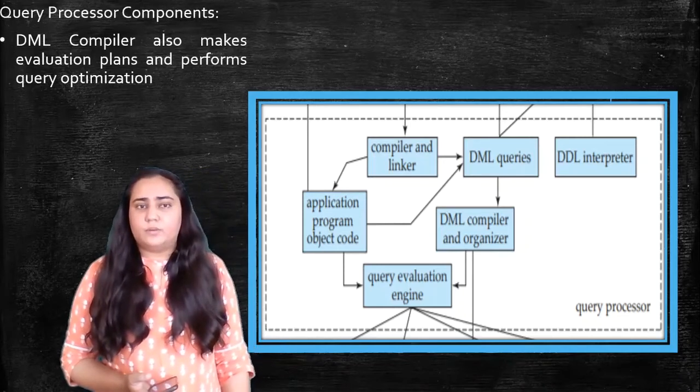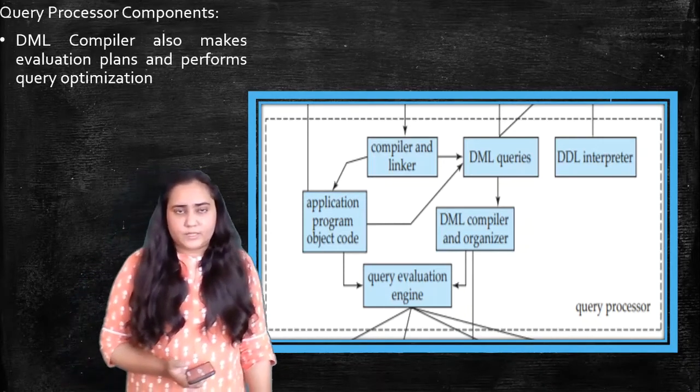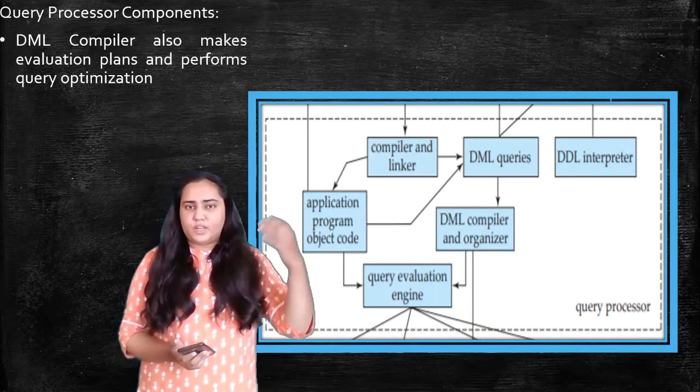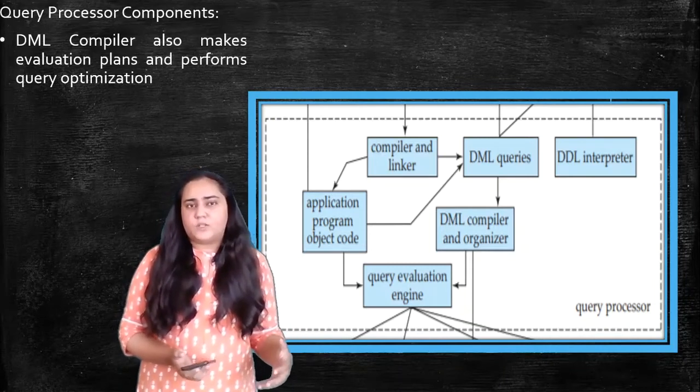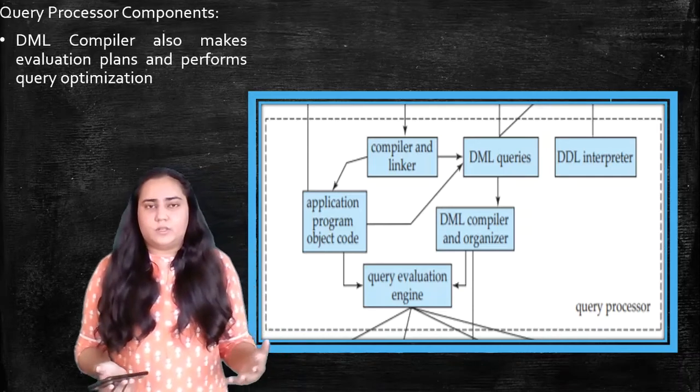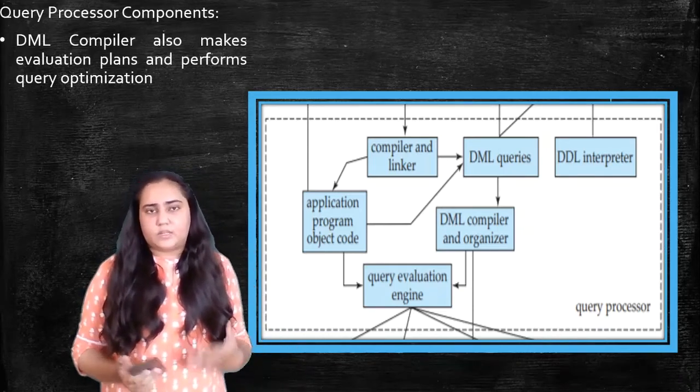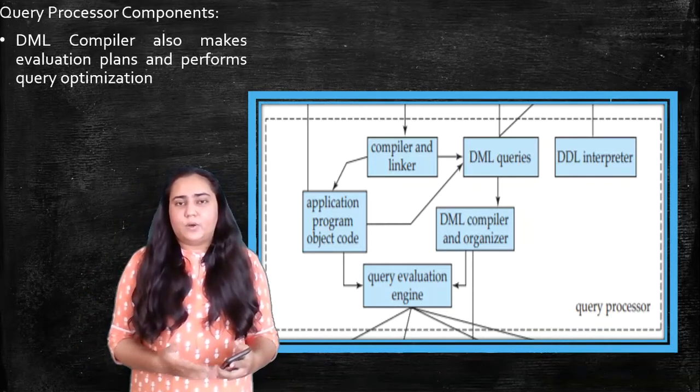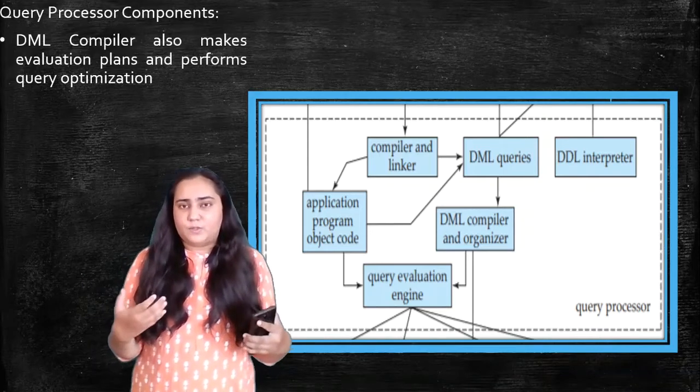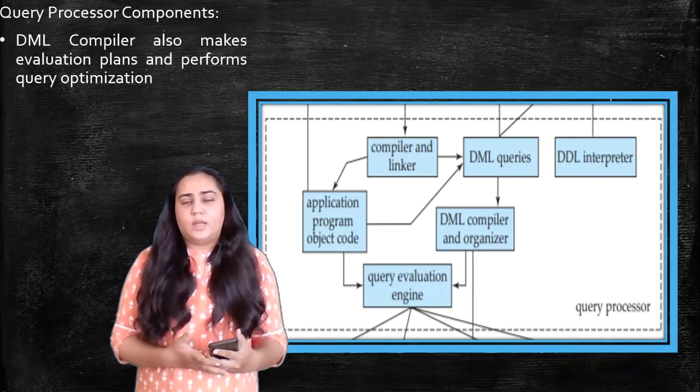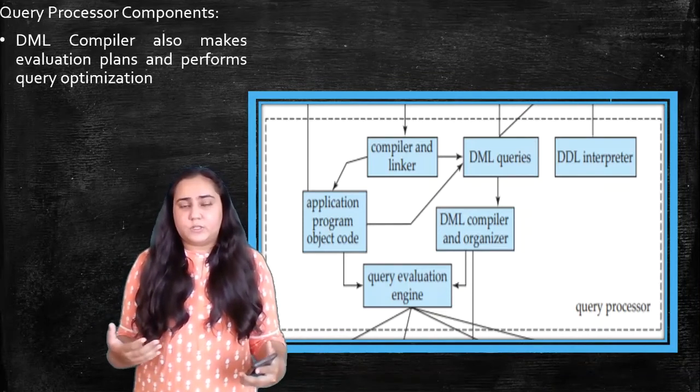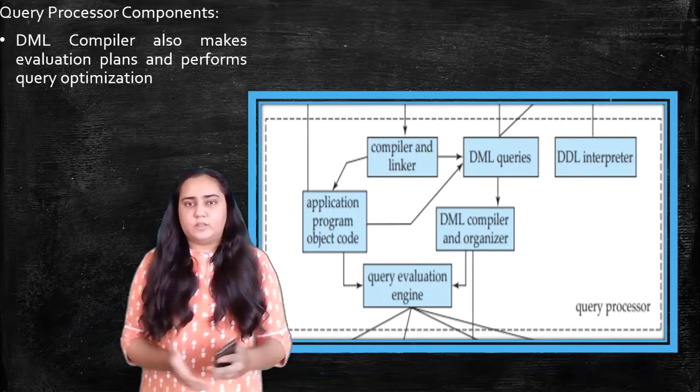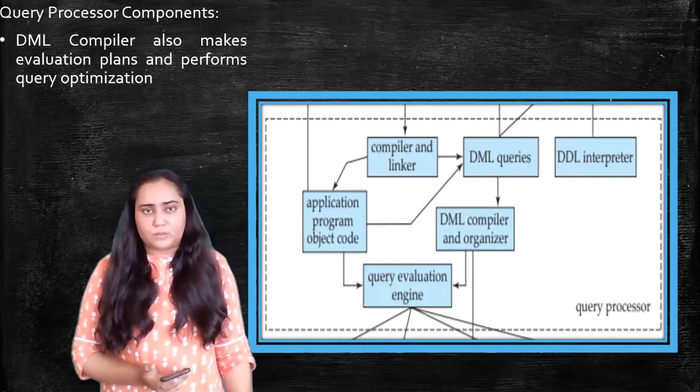DML compiler also makes evaluation plans and performs query optimization. So in database language, whenever there's code coming from outside into the database, we call it a query because it's like a question that you want to ask to the database, and you get an answer. So the DML compiler also creates evaluation plans about how to actually implement that query and how to make it more efficient. And again, this is another whole chapter that you're going to study. So you don't need to worry much about this right now.